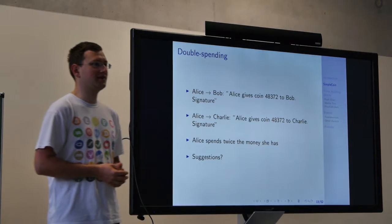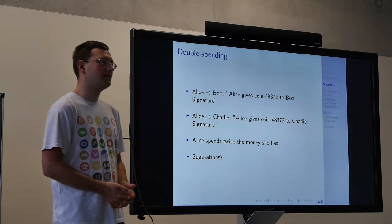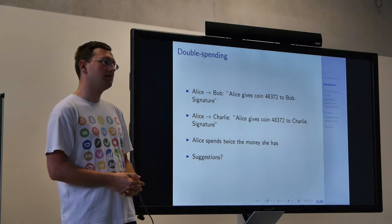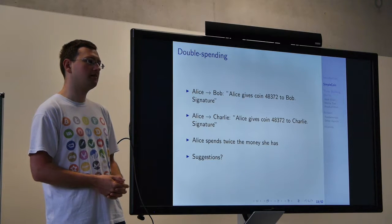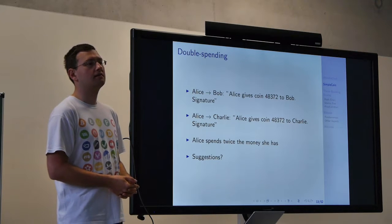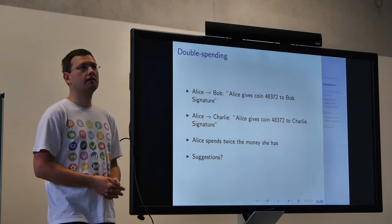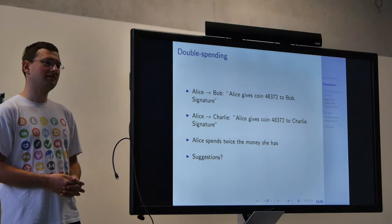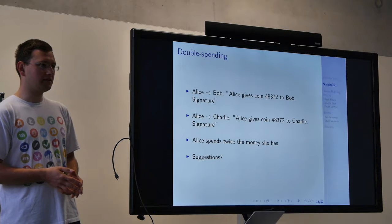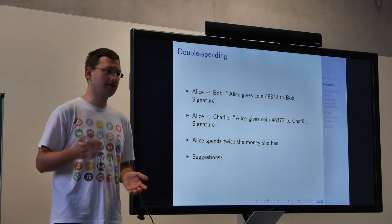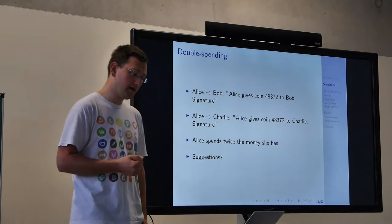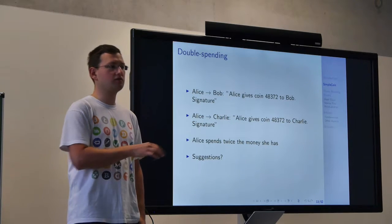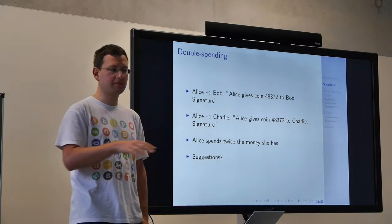How do we prevent Alice from creating two valid transactions for the same coin? Someone suggested tracking which coins have been spent — yes, that's the way. But the question is: who is going to track it? In the current system, the bank does this job — they have a database and remember who has how much money. But if we want to avoid a central point of failure, we need to distribute this task and make it independent of any single entity.